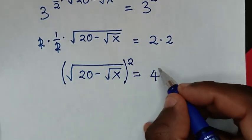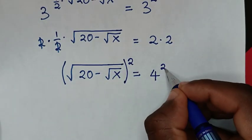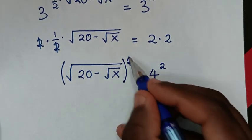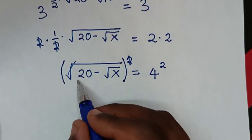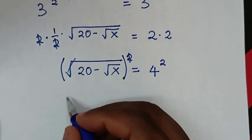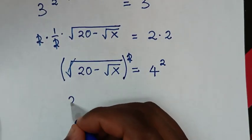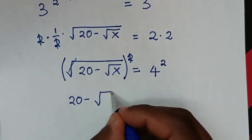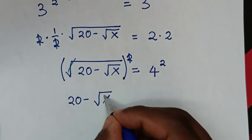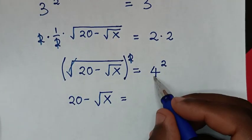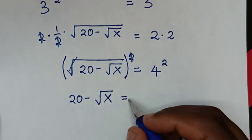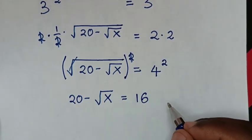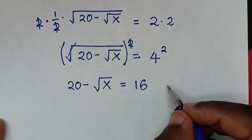In the next step, to remove the outer square root, we square both sides. The square and the square root cancel on the left, so it becomes: 20 minus √x equals 4 squared, which is 16.